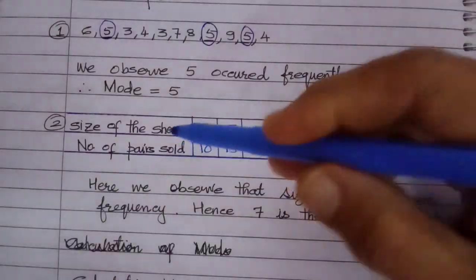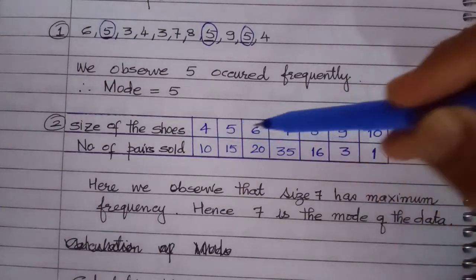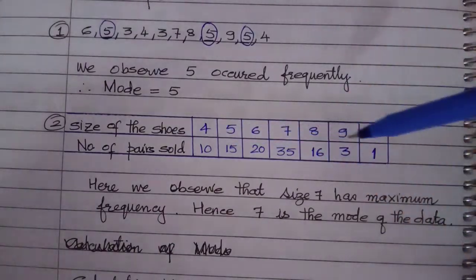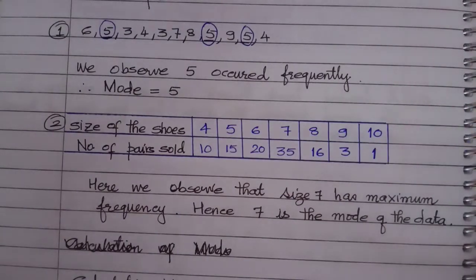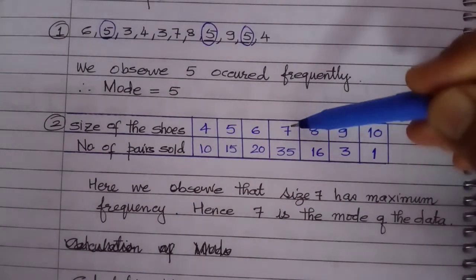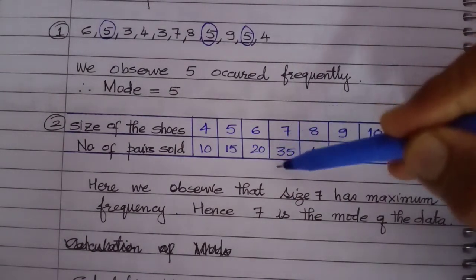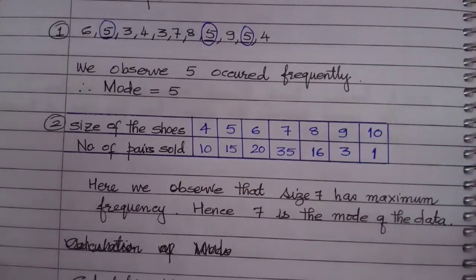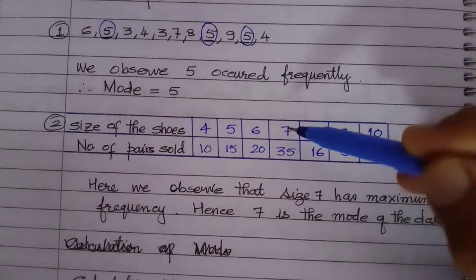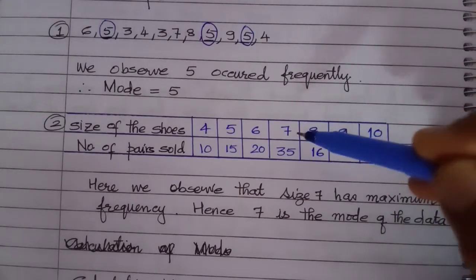Let me take another example: size of shoes. These are the sizes of shoes 4, 5, 6, 7, and how many pairs were sold. The 7 number shoes were sold much - 35 pairs of shoes were sold which was of 7 number. So the mode is 7 over here.